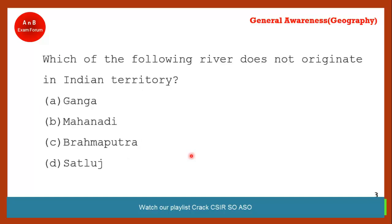Coming to the next question: which of the following rivers does not originate in Indian territory? This is a very important question. Ganga originates from Gangotri in Uttarakhand; Mahanadi originates in Chhattisgarh; Satluj originates from Uttarakhand. Brahmaputra originates from the Chima Yangdang glacier, which is in Tibet. So the correct answer is option C — Brahmaputra.